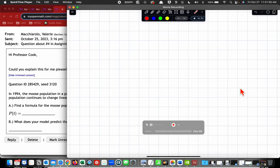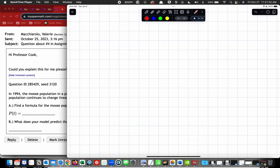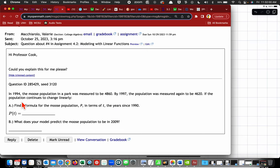They've given us the two points: 1994, comma, 4860, and they also have given us the point 1997 and 4620. So you should observe that the population is decreasing.